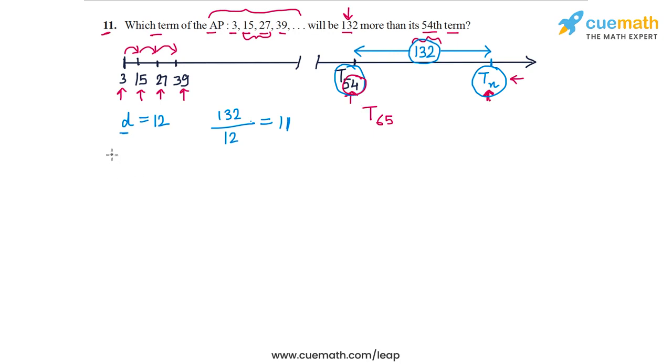Now let's discuss a more algebraic way to solve the same problem. The first term of the given AP is 3, and the common difference is 12. One algebraic approach could be to find the numerical value of the 54th term, which will be equal to a plus 53d. We can substitute the values of a and d and find the 54th term.